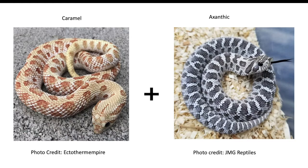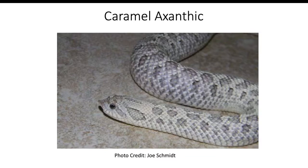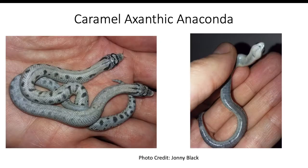Next we're going back to the caramel gene and combining it with the xanthic. When you do this combination you get a caramel xanthic. If you want to take it a step further and add the anaconda gene, you'll get a caramel xanthic conda.